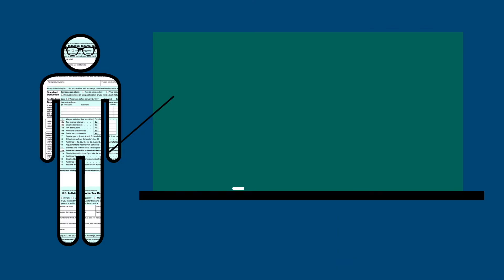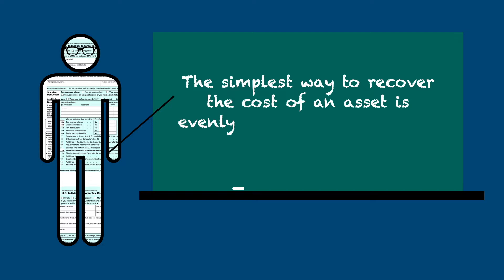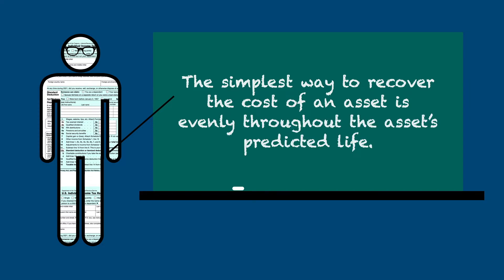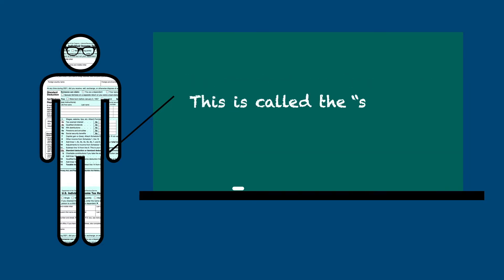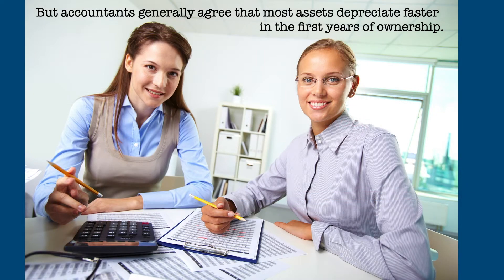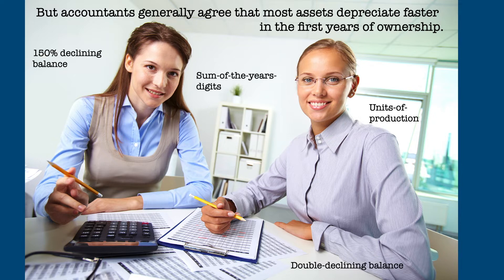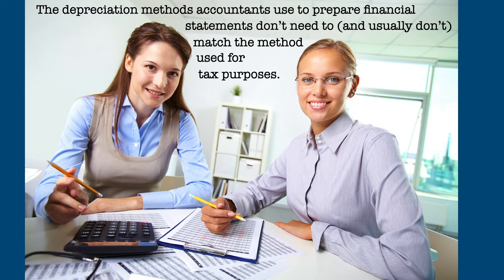The simplest way to recover the cost of an asset is evenly throughout the asset's predicted life — this method is called the straight-line method. But accountants generally agree that most assets depreciate faster in their first few years of ownership, and as such have devised a number of additional depreciation methods to account for this phenomenon. The depreciation methods accountants use to prepare financial statements don't need to, and usually don't, match the depreciation method used for tax purposes.